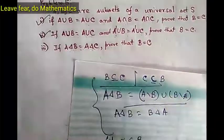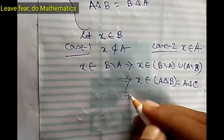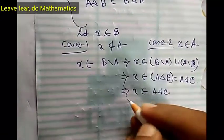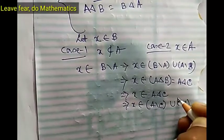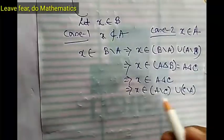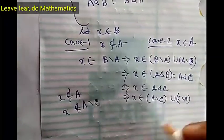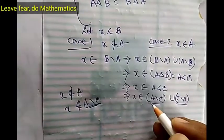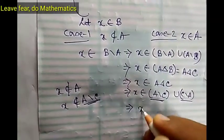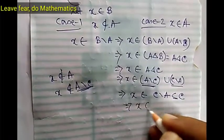Since A symmetric difference B equals A symmetric difference C (given in the problem), this implies X belongs to A symmetric difference C, which means X belongs to (A difference C) union (C difference A). Now we have that X does not belong to A, so X cannot belong to A minus C. But X belongs to the union of (A minus C) and (C minus A), and since X does not belong to A minus C, X must belong to C minus A. Since C minus A is a subset of C, X belongs to C.